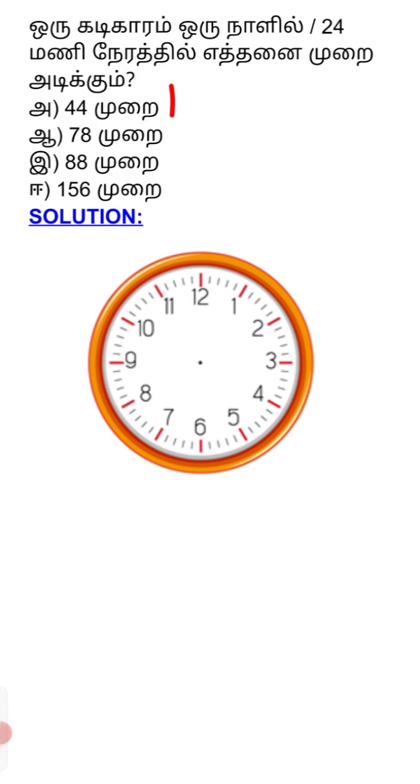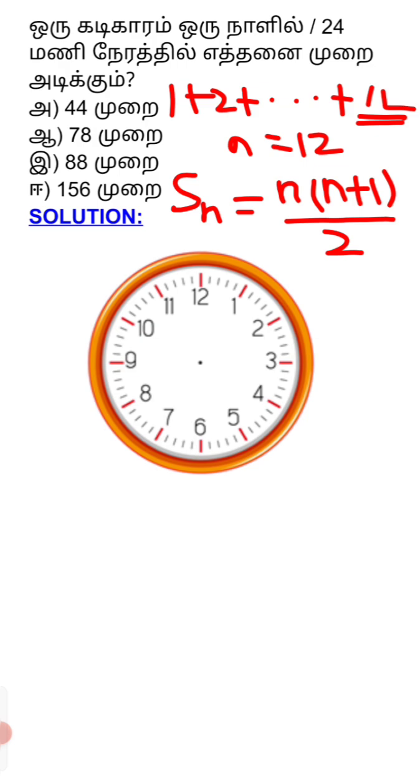Otherwise, this is the general formula: 1 plus 2 plus 3 plus up to 12 o'clock. This is the value of n. We all know the sum of n natural numbers formula: n into n plus 1 divided by 2. So replace with 12: 12 into 12 plus 1 divided by 2.